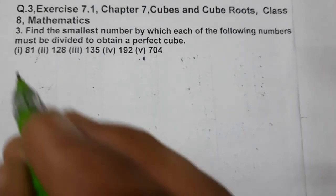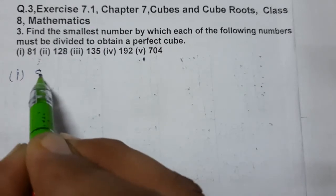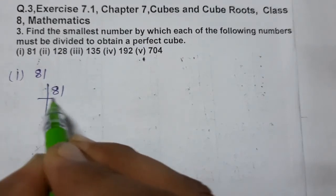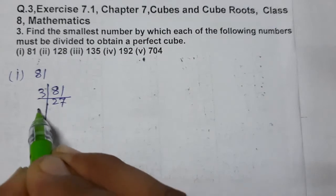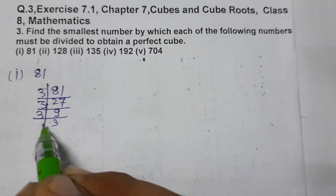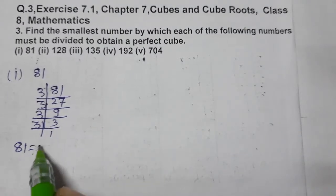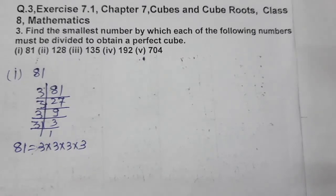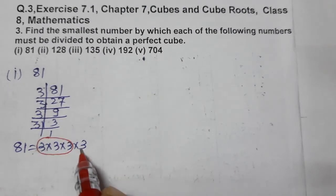Let's start with question number 1, first part: 81. Taking the prime factors of 81 as usual: 3 into 27, 3 into 9, 3 into 3, and 3 into 1. So 81 can be written as 3 × 3 × 3 × 3. Here the triplet of 3 is complete for the first three, but one 3 is left over.